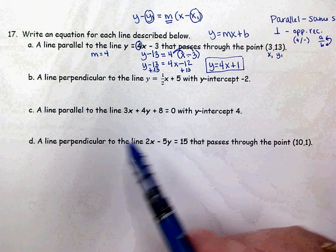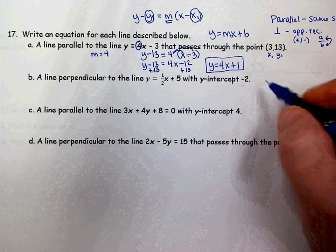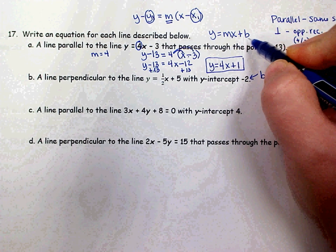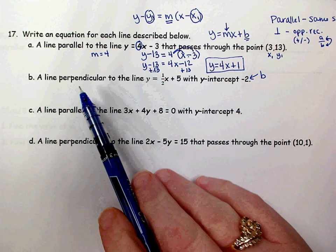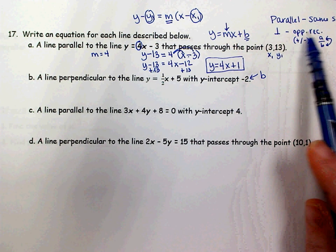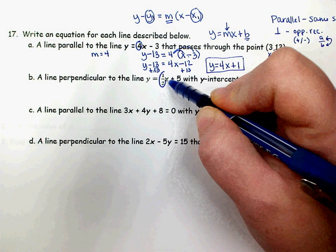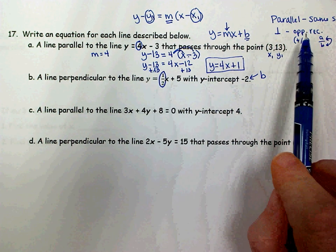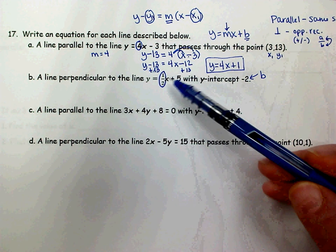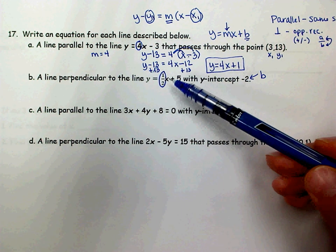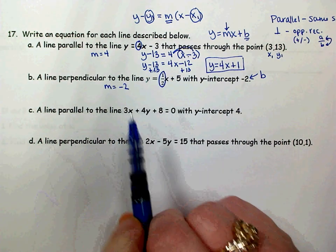On part B, we want a line perpendicular to the given line, and it's giving us the y-intercept, which is the b value in slope-intercept form. So all I need is the slope. Perpendicular lines have opposite reciprocal slopes. The slope of the given line is the number in front of x, which is 1/2. Since it's positive, I want my slope to be the opposite — negative. I also have to flip that fraction, so 1/2 becomes 2/1, which is just 2. My slope needs to be negative 2.